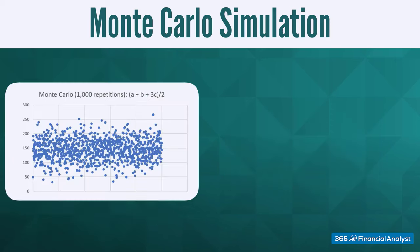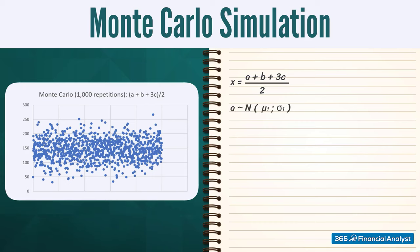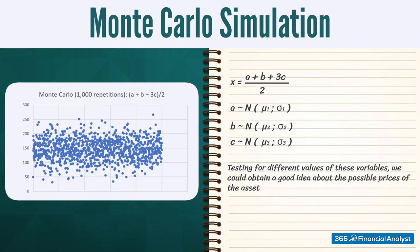This technique is very useful whenever an analyst would like to gain an idea of the different possible realizations that could be obtained through a given distribution function. For example, if a distribution function considers three possible variables influencing an asset's price, then by testing for different values of these variables, we could obtain a good idea about the possible prices of the asset, provided that the distribution function represents well the development of the asset's price.